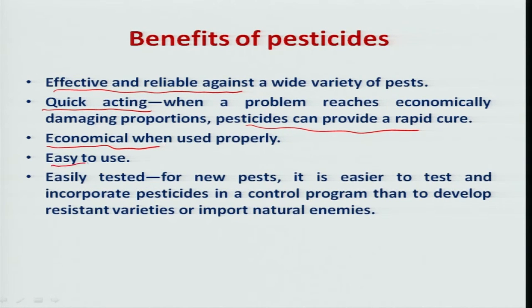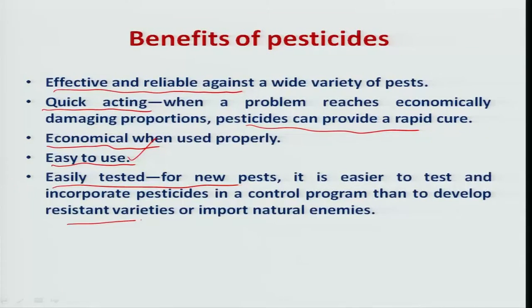From the farmer's point of view, it is very easy to apply insecticides compared to some of the other methods of insect pest management. Whenever there is a new insect on a crop, we can test a particular insecticide within one season and then immediately recommend or include it in the IPM package. But the same will not hold good with respect to resistant varieties or natural enemies integration, because each technology takes about 4 to 5 seasons before inclusion in the IPM package.